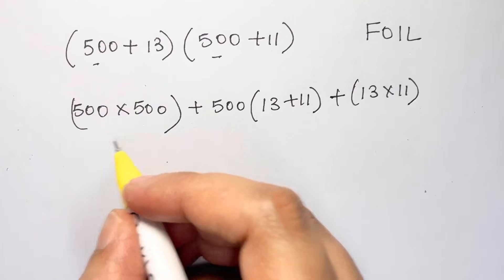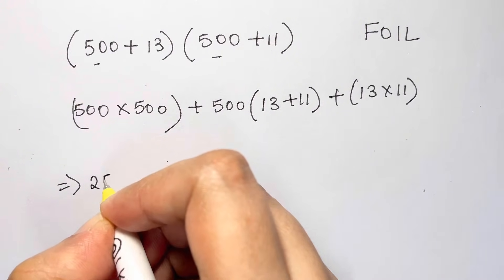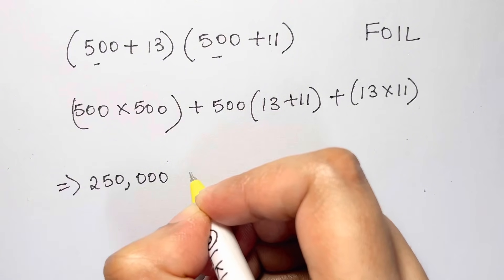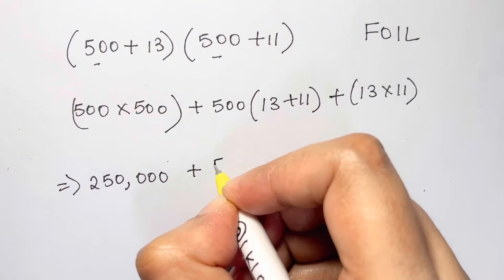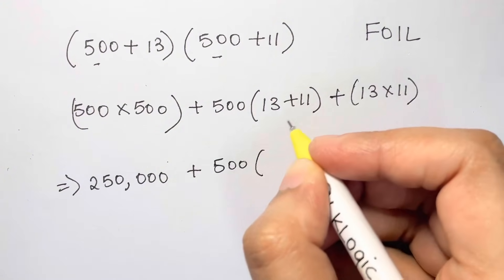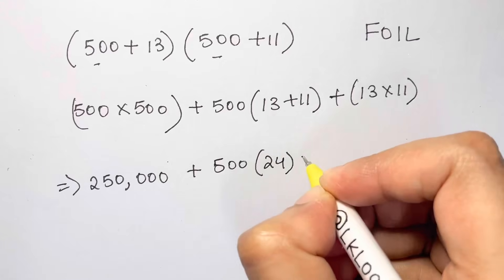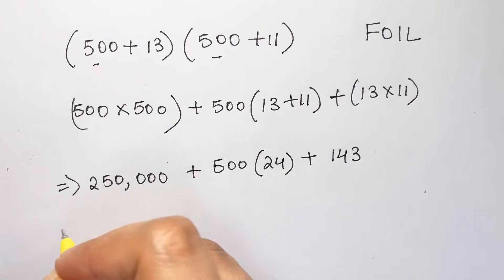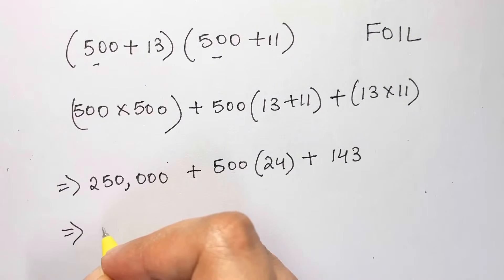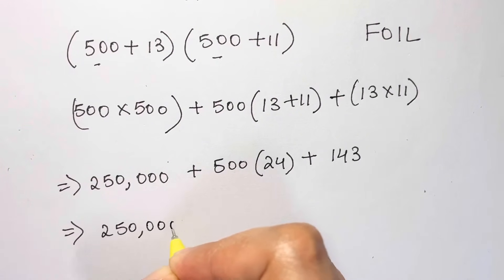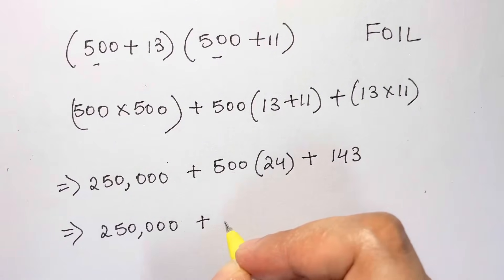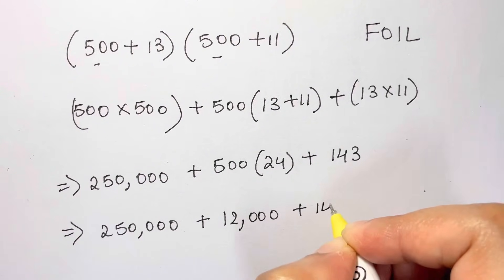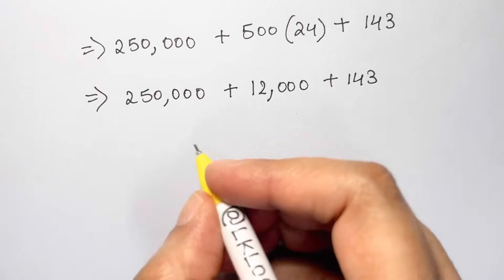Now 500 times 500 is 250,000, plus 500 times 13 plus 11 is 24, plus 13 times 11 is 143. Now 250,000 plus 500 times 24 is just 12,000 plus 143.